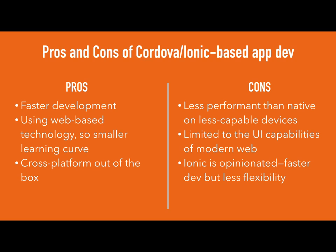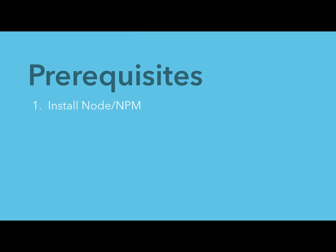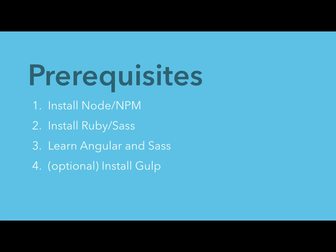Things you need to get set up: Node and npm, because everything is based on node packages. If you're using Sass, you need a local version of Ruby managed by RVM — Ruby Version Manager. You need to know enough Angular and Sass to operate in them. Gulp will make your life easier. For actual deploys, you'll need Xcode and a $99/year Apple developer subscription, or the Android Eclipse SDK and around $20/year for Android.